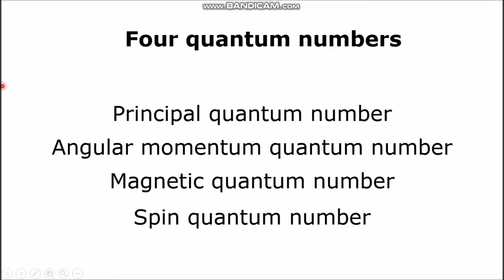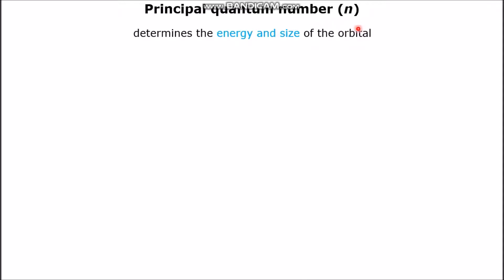For the remaining of my video, I will be describing these four quantum numbers thoroughly. Let's talk about the principal quantum number, usually represented as the letter code N. N determines the energy and size of the orbital within the atom. N includes any positive integral values starting from 1 all the way up to infinity.